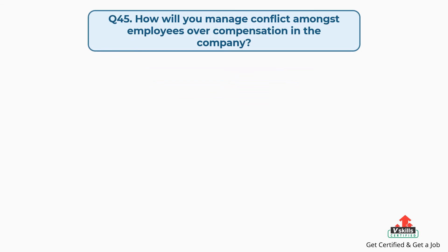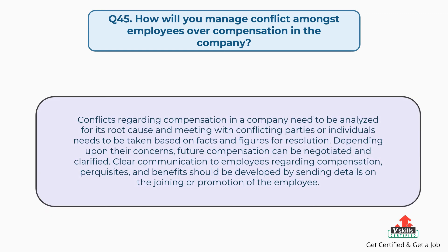Question number forty-five: How will you manage conflict amongst employees over compensation in the company? The answer is, conflicts regarding compensation need to be analyzed for their root cause, and meetings with conflicting parties need to be taken based on facts and figures for resolution. Depending upon their concerns, future compensation can be negotiated and clarified. Clear communication to employees regarding compensation, perquisites, and benefits should be developed by sending details on joining or promotion.